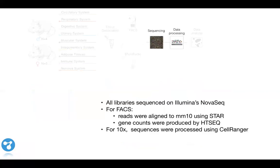All of the libraries, whether from FACS or the microfluidic approach, were sequenced on Illumina's NovaSeq. For FACS we got approximately 700,000 reads for every single cell. Then all the reads that came out of the sequencer were aligned to the mm10 reference genome using STAR, and then the gene counts were processed by HTSeq. All the details and scripts used are again part of the released preprint. For 10x, the microfluidic part of the dataset, everything was processed using Cell Ranger, which is software available by 10x Genomics using their default parameters.